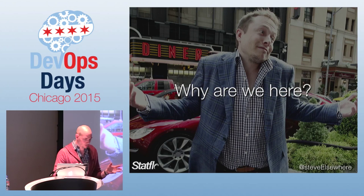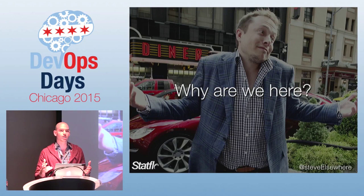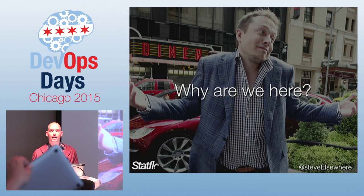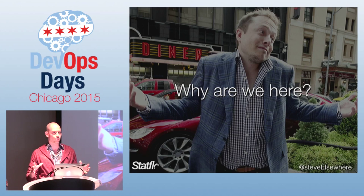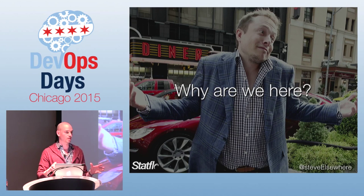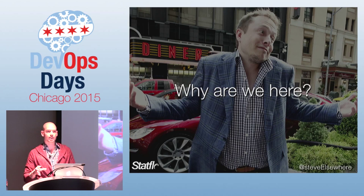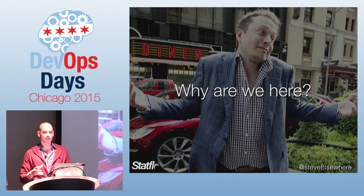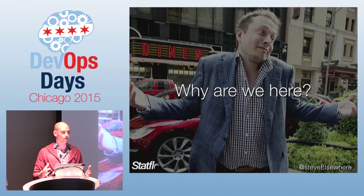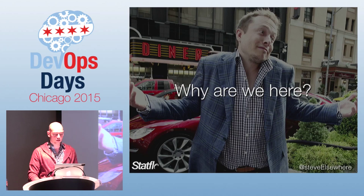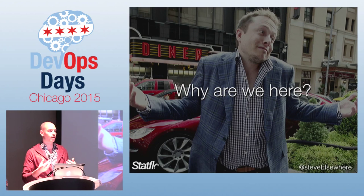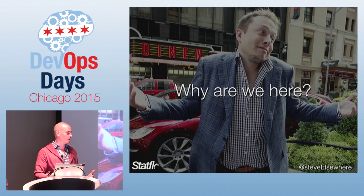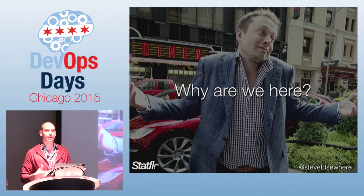We all have different reasons for being here, but overall this event and this series exists because there's conflict in an organization — across silos, across different groups, across organizations, with different priorities and different incentives. This affects everything that we do. It adds friction, constraints, and difficulty. My talk is mostly about the most effective means I've found for alleviating that conflict and improving communication and collaboration in organizations trying to make a change.